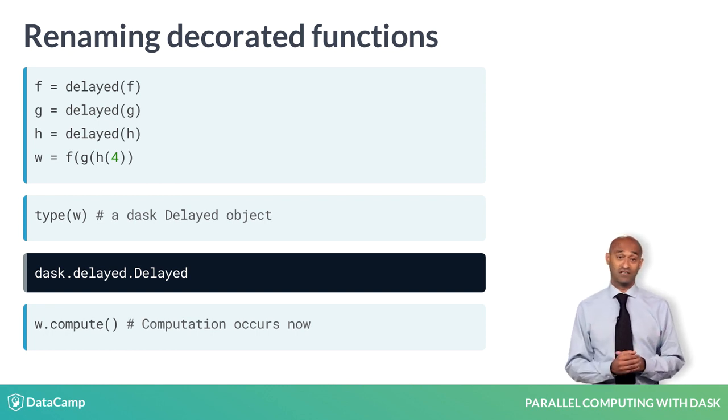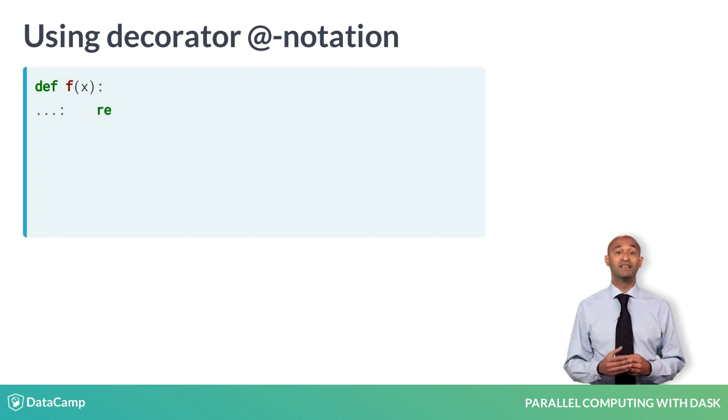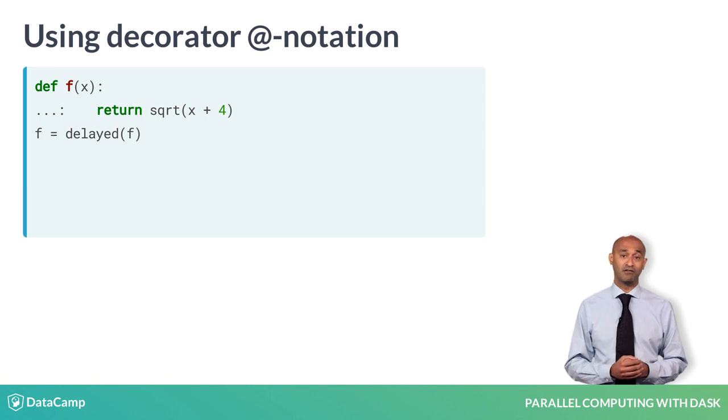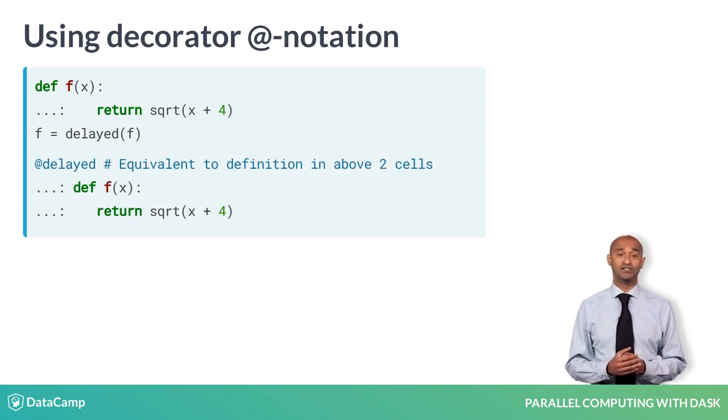This means they always return delayed objects that defer computation until the compute method is called. To recap, we can define a function like F and rebind the label F to the new function obtained after applying the decorator delayed to the original F. The at symbol here is an equivalent shorthand notation to decorate functions in this manner. Here, the at symbol means apply the decorator function delayed to the function described below and bind that decorated function to the name F.